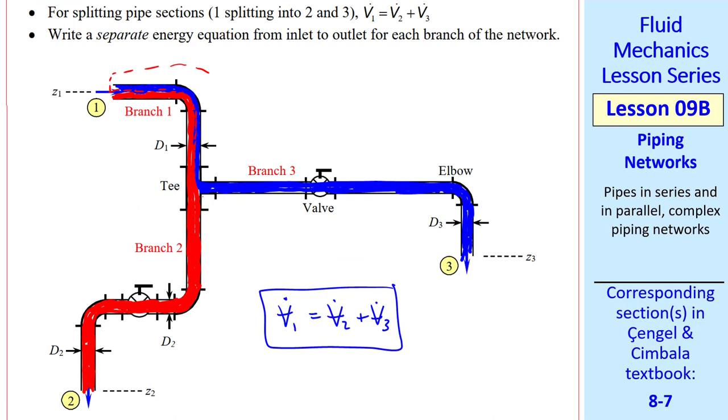To use our energy equation, we have to select a control volume. Let's first select the control volume that includes only the blue water. Then we can write an energy equation for this control volume like normal. The same volume flow rate that comes into 1 exits through 3. We're used to the energy equation going from 1 to 2, but now it will go from 1 to 3. Other than that, the energy equation is identical to what we had before, including both major and minor losses, and even pumps or turbines if there were such things in this branch.